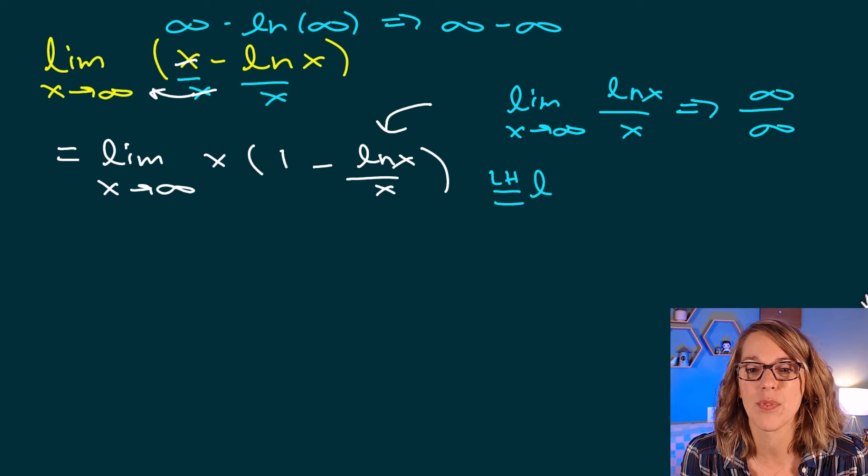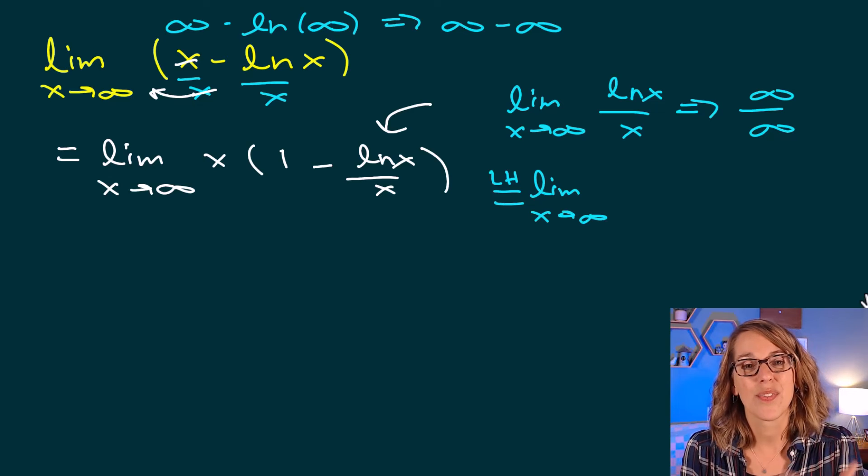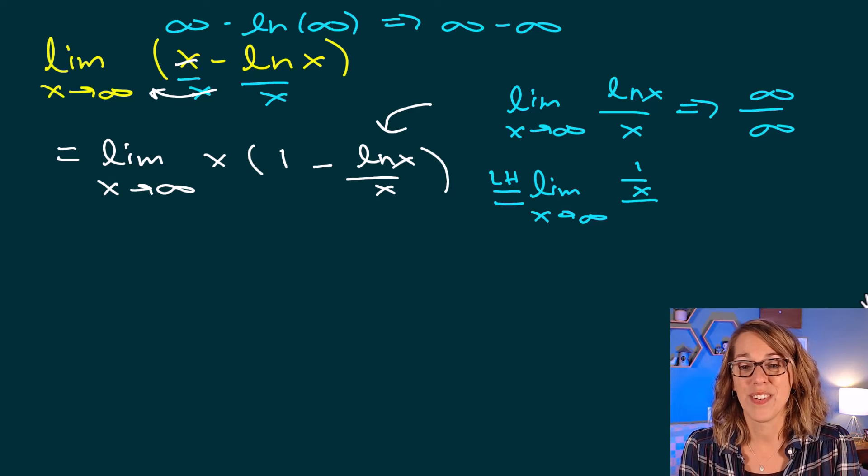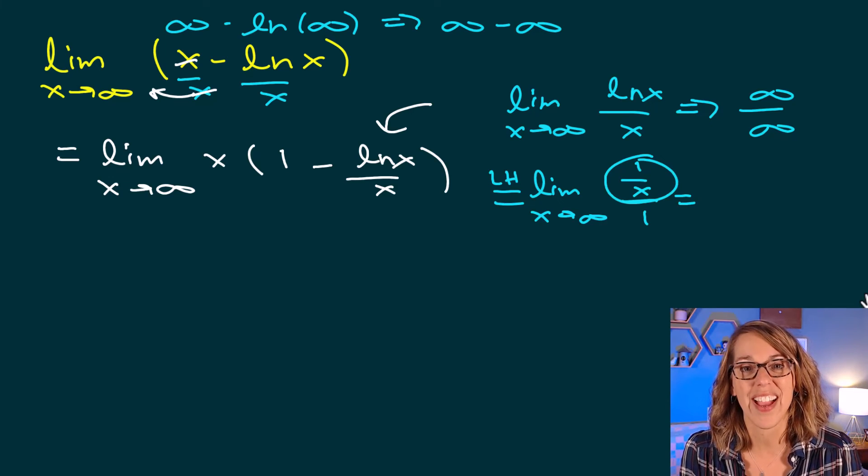So as I apply L'Hopital's rule, I get the limit as x approaches infinity. The derivative of the natural log of x is 1 over x, and then the derivative of x is just 1. So I end up with 1 over x.